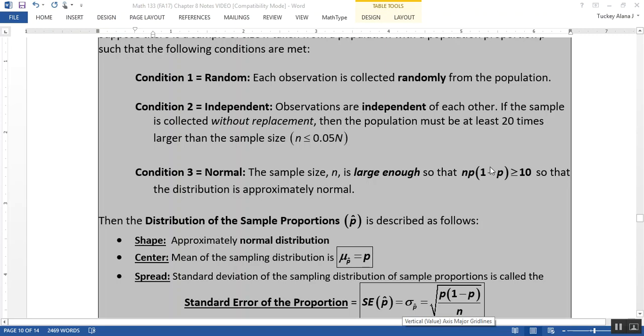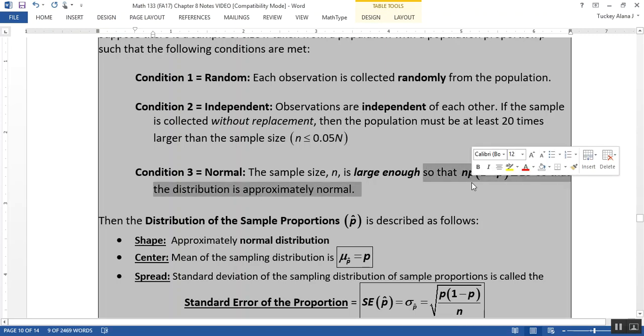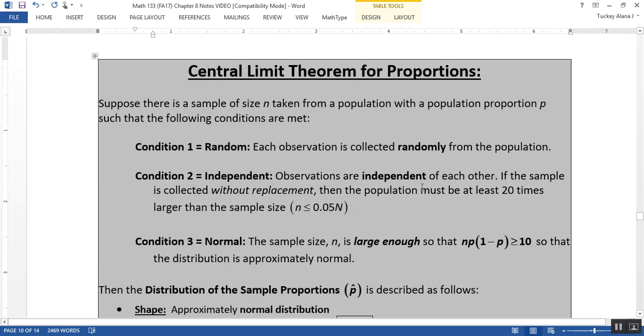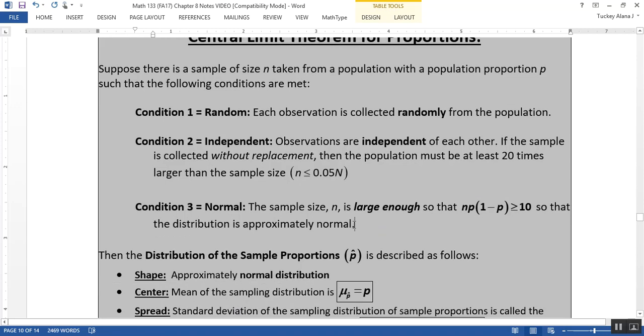It's interesting to note that this is not the same requirement as section 8.1. In 8.1, to be large enough just meant n had to be greater than or equal to 30. But that doesn't make sense for proportions. If you're calling people about presidential approval, it would make no sense to call 30 people - you'd want 300 or 3,000 people. You need n times p times (1-p) greater than or equal to 10 for the distribution to be approximately normal.